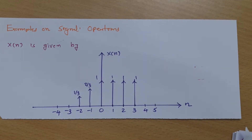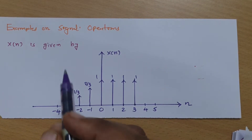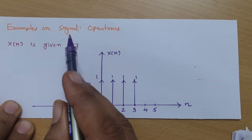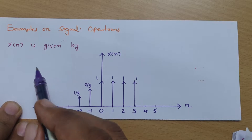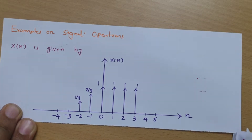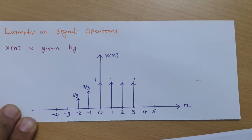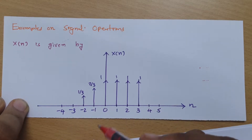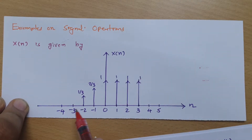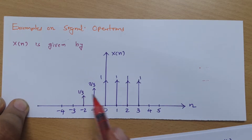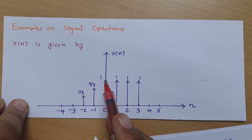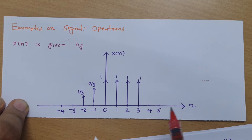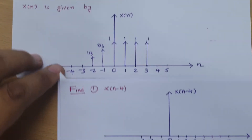Welcome to the signal and system playlist. In this session I will be explaining examples on signal operations. In the previous session I explained a few signal operations, and now I will solve examples. Here, x(n) is given by a graphical representation where x(n) has data: at -4 it is 0, at -3 it is 0, at -2 it is 1/3, at -1 it is 2/3, at 0, 1, 2, 3 it is 1, and for the rest it is 0.